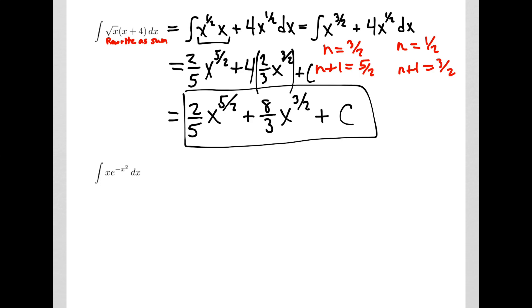In our second problem, I've got e to an expression. For this to work, it has to be dealing with e raised to negative x squared, and the derivative of that expression is negative 2x. So when I have my formula, I need to have e to the u times du dx. In this problem I've got my e to the u, but I don't quite have du dx — it's missing a negative 2.